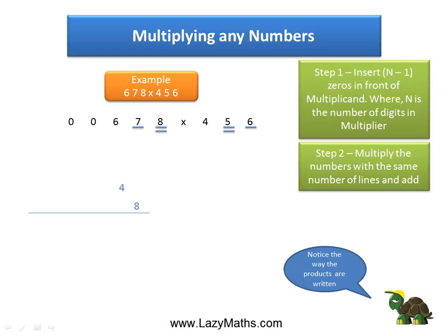The next pattern or step is to do 7 times 6 plus 8 times 5. 7 times 6 is 42, 8 times 5 is 40, 42 plus 40 equals 82. And we put 82 also in the same carryover format.